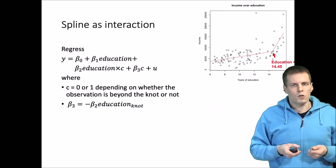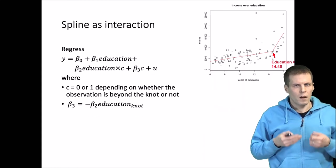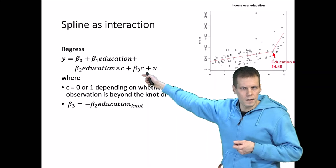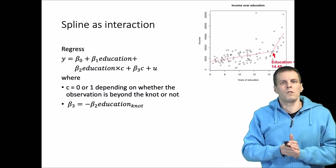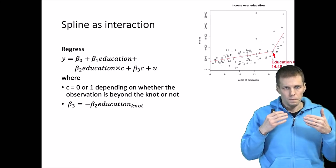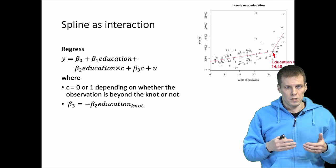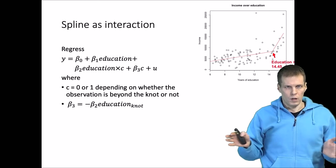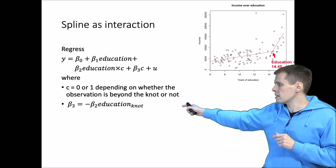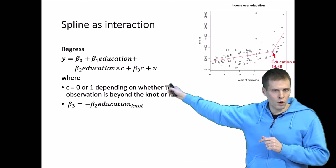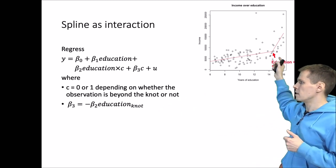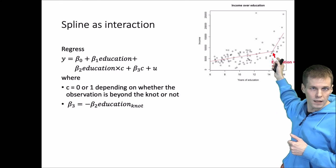Spline regression can also be understood as an interaction model. So we can understand this as an interaction where we have education plus education times C, and C here, again this is my own convention, which is a binary variable that indicates whether the x value for that observation is above or below the knot value. If it's below then it receives zero, if it's above then it receives one. And then we set the beta 3 coefficient for the knot. We constrain it to be that kind of equation which basically defines that these lines will meet at the knot point.